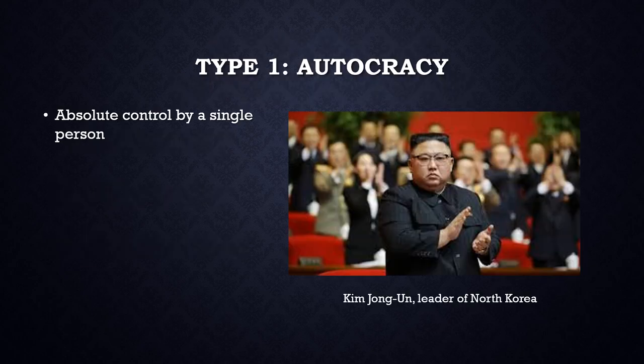An autocracy is a government where one person exercises total power. The leader makes all decisions and their will cannot be changed unless the leader changes their mind. In these countries, the leader will certainly have many advisors to rely on, but ultimately the decisions are made by the leader alone.